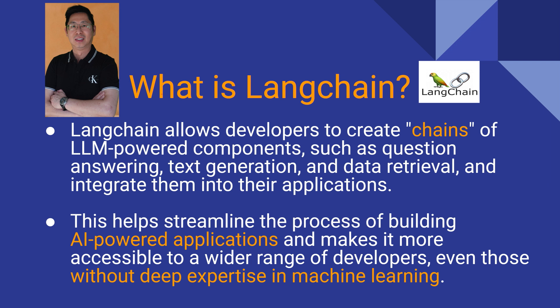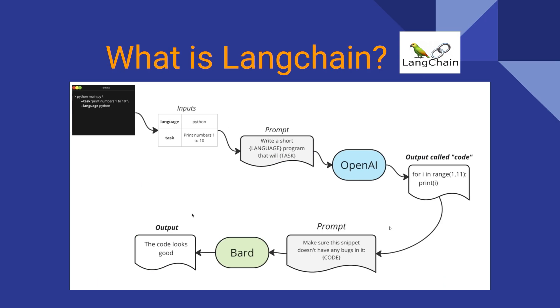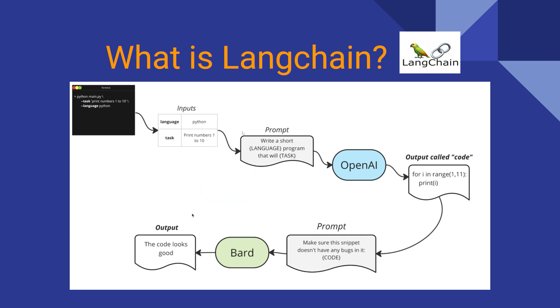LangChain supports large language models and allows you to use APIs for Python programs. Deep understanding of machine learning is not required. Using prompt engineering, you can write a short program with a variable for the programming language — whether Python, JavaScript, or C++ — and print numbers 1 to 10 in each language.